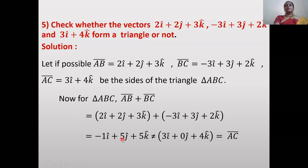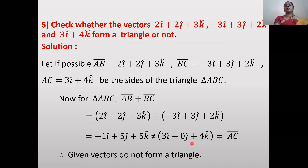AB̄ + BC̄ = -i + 5j + 5k, which is not equal to ĀC̄ = 3i + 0j + 4k. Since AB̄ + BC̄ ≠ ĀC̄, the triangle law of addition is not satisfied, so these three vectors do not form a triangle.